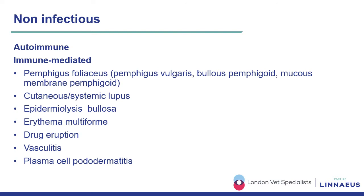Considering non-infectious causes, we have a long list of autoimmune and immunomediated conditions. The most important is pemphigus foliaceus, described as the most common autoimmune skin condition. We can also have cutaneous or systemic lupus, and less frequent forms of pemphigus such as pemphigus vulgaris, bullous pemphigoid, mucous membrane pemphigoid, epidermolysis bullosa, and the spectrum of erythema multiforme and drug eruptions.